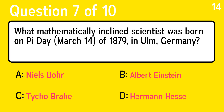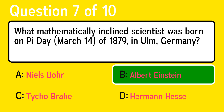Question 7, what mathematically inclined scientist was born on Pi Day, March 14, 1879 in Ulm, Germany? The correct answer is B, Albert Einstein.